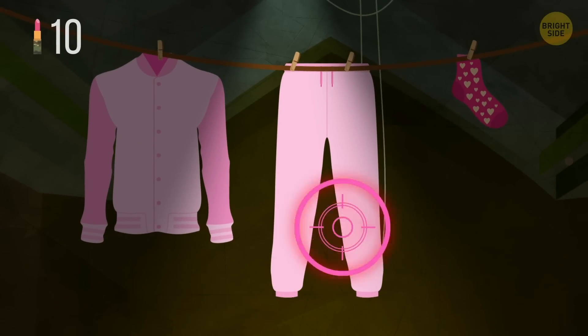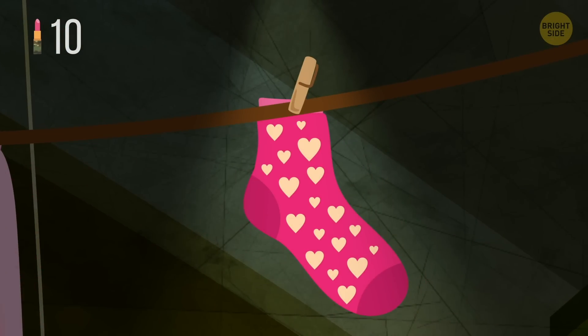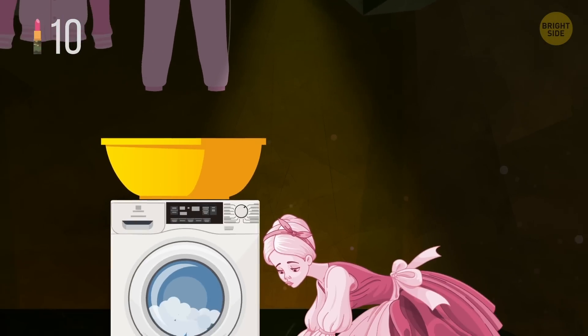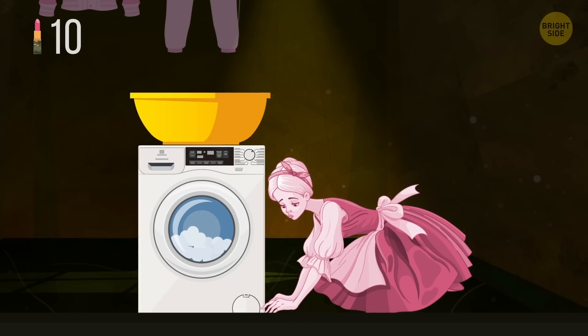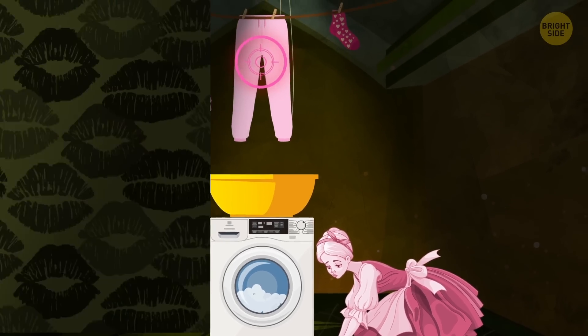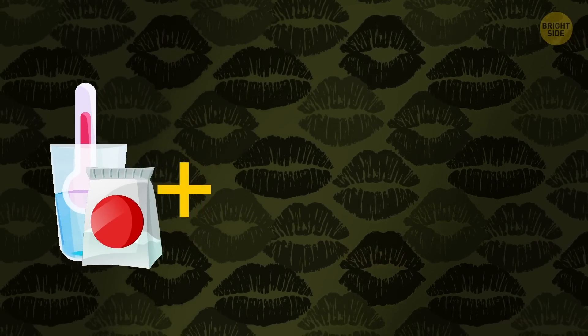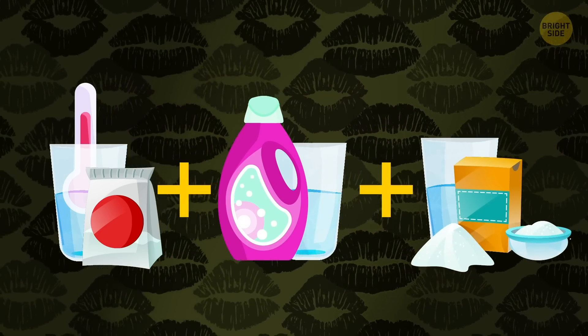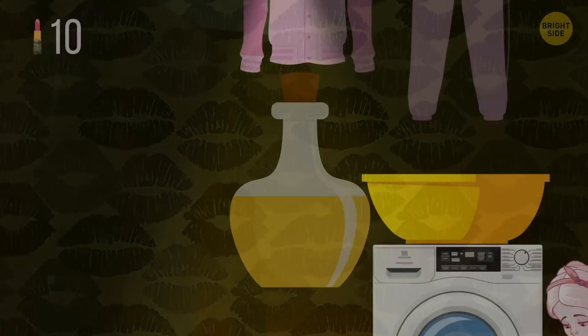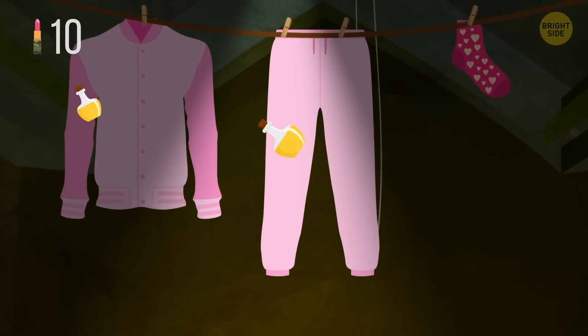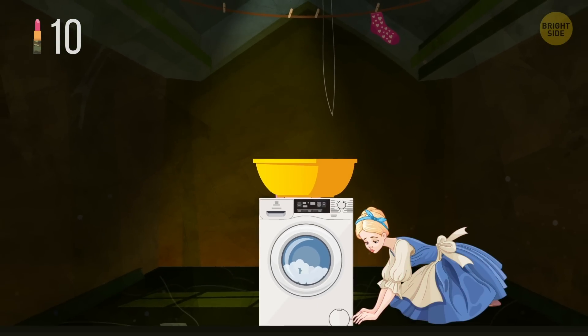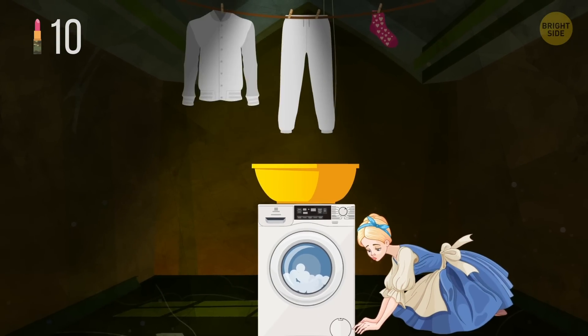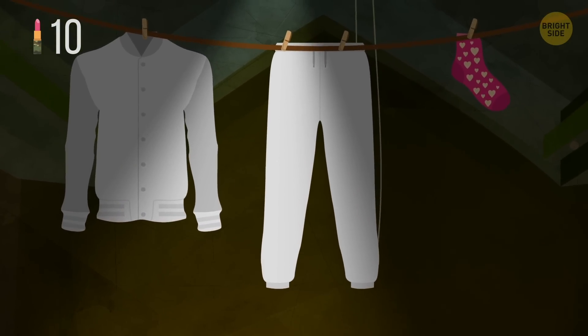Even if you've accidentally washed your load of whites with a bright red sock – and let's admit it, these things happen even to the best of us – you still have a chance to save your clothes. Mix a solution of warm water and baking soda with half a cup of detergent and half a cup of salt, and soak your ruined clothes in the solution before putting them in the dryer. If everything goes well, you'll get your stuff back as snow-white as before.